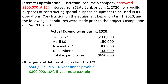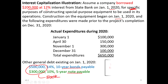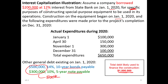Here's an example: a company borrowed $200,000 at 12% interest from a bank on January 1st for the specific purpose of constructing a special-purpose piece of equipment to be used in its operations. Construction began January 1st, and several expenditures were made prior to the project's completion. The company also already has debt outstanding — 10-year bonds and a five-year note payable totaling $800,000 — so with the additional $200,000 borrowed, total debt is $1 million.